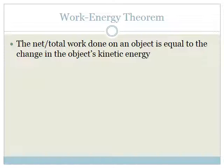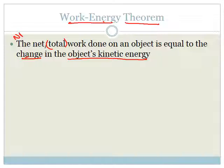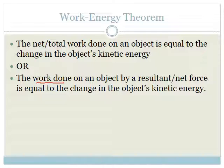Since work and energy are related — where energy is the ability to do work — there is a theorem. The theorem states: net or total work done on an object is equal to the change in the object's kinetic energy. We could also say the work done on an object by the resultant force is equal to the change in the object's kinetic energy.